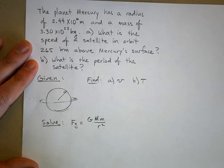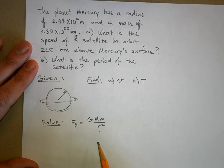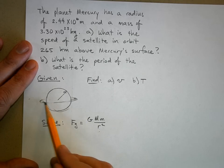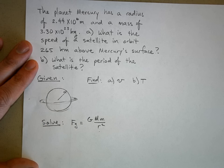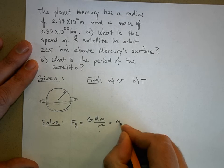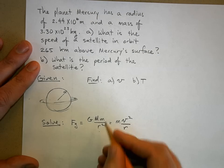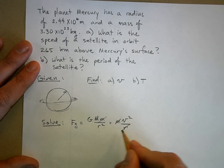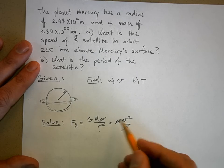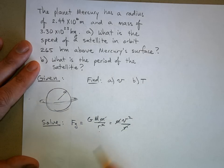But this force of gravity is also a centripetal force, because the satellite is going in a circle around Mercury. Centripetal forces are equal to m v squared over r. So this mass cancels, one of the radii cancel, and solve for v.